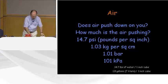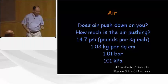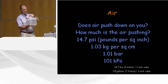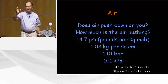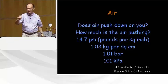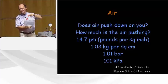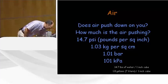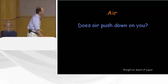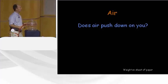We talk about 14.7 PSI rather glibly. This is 14 pounds of water in this jug; this is one cubic inch. So every square inch of our bodies has that much weight being pressed down on it. It's basically two gallons of water on each square inch, so air does push down on you.